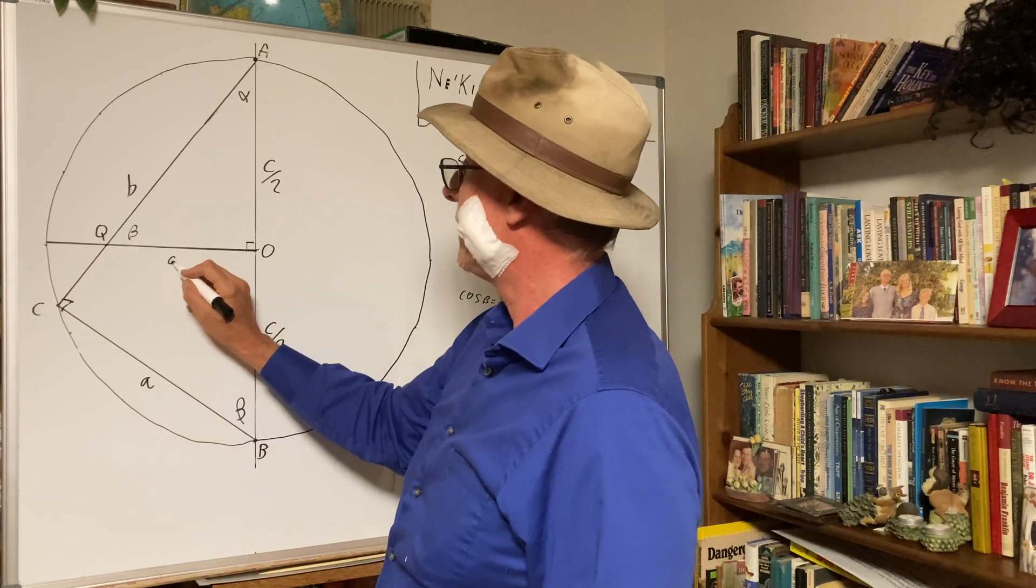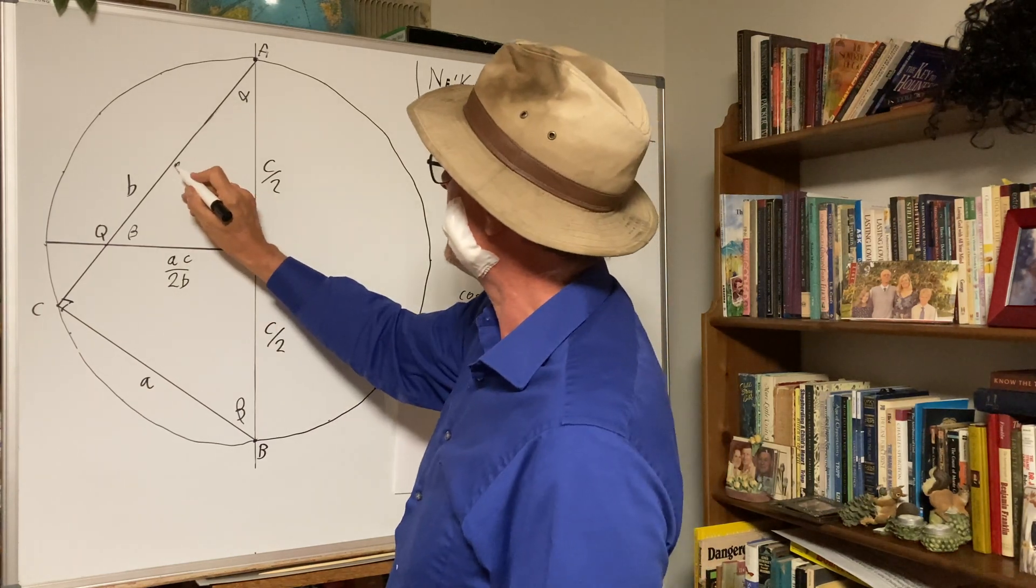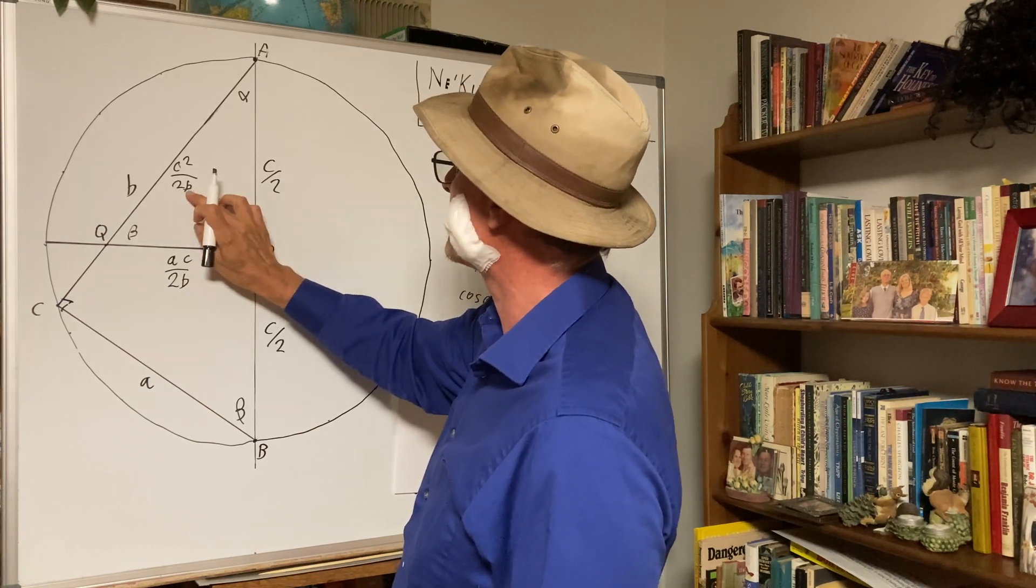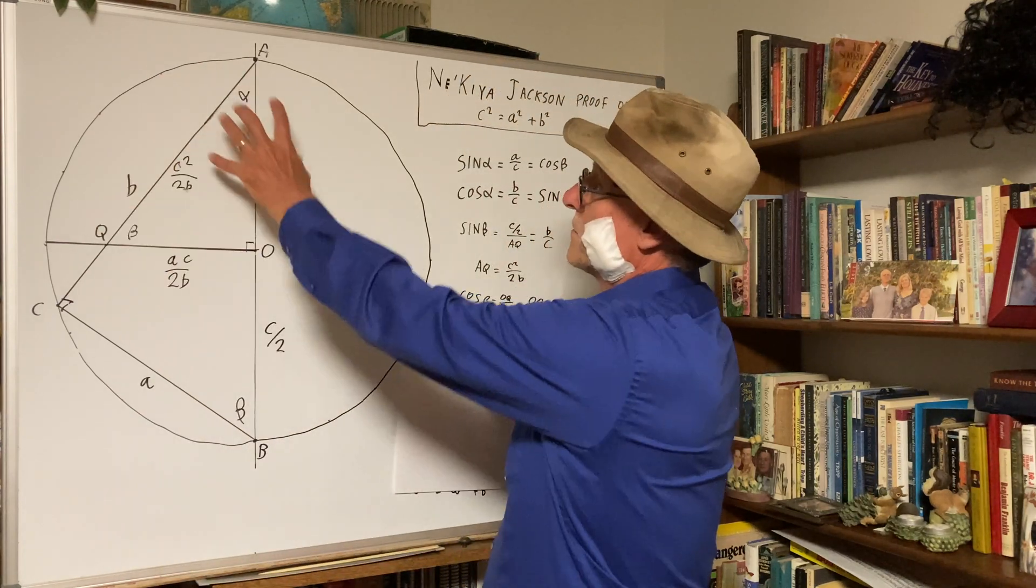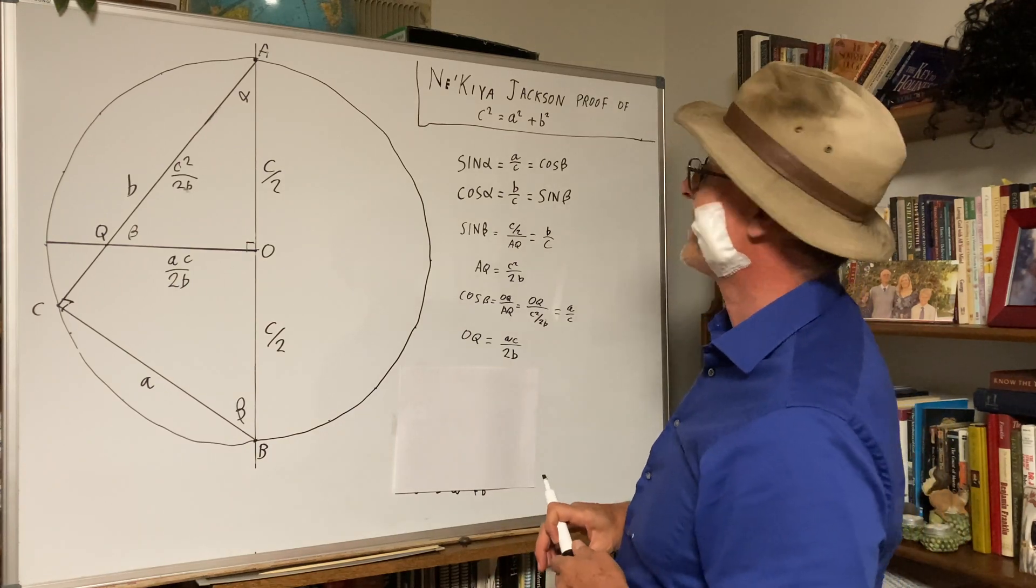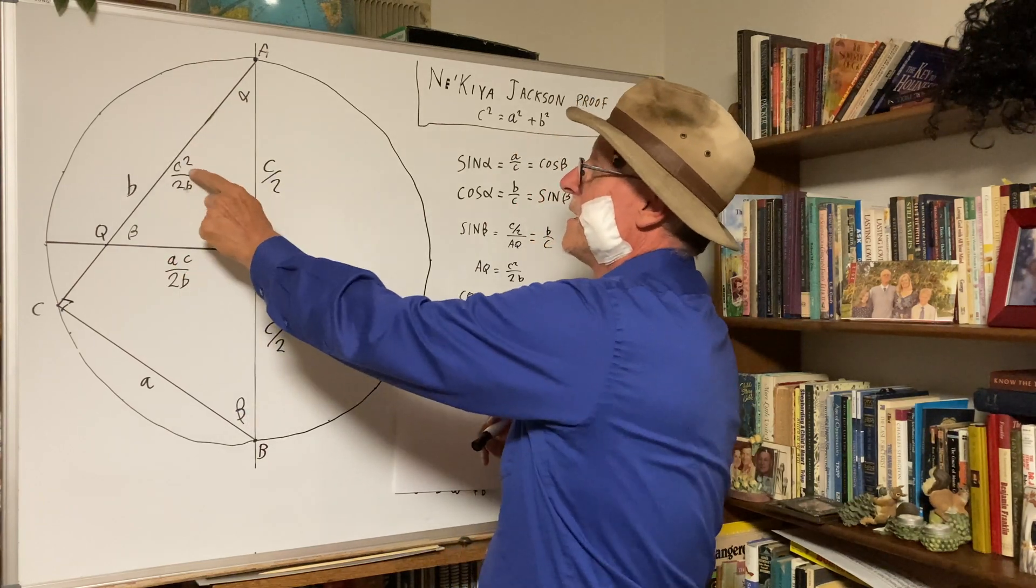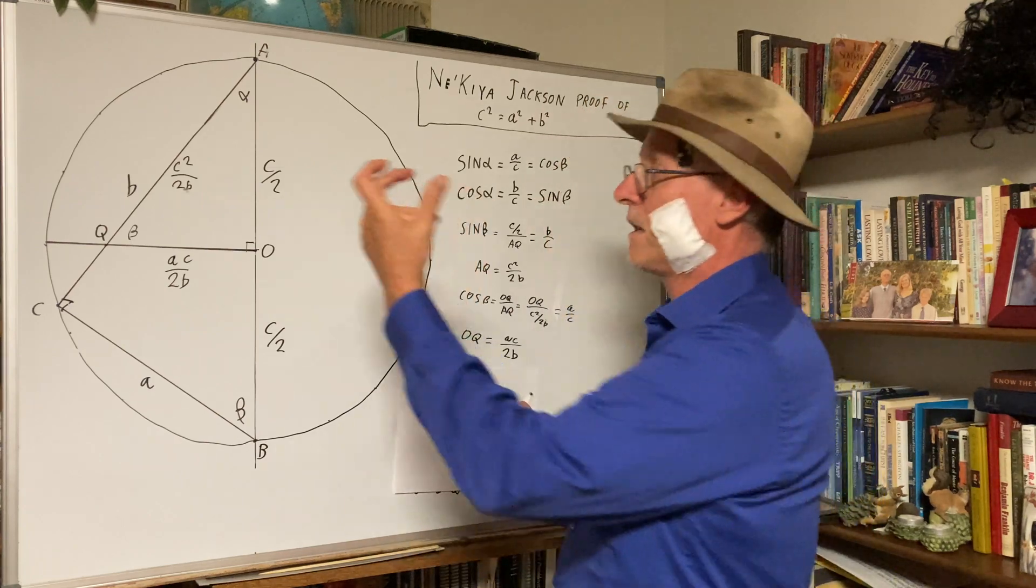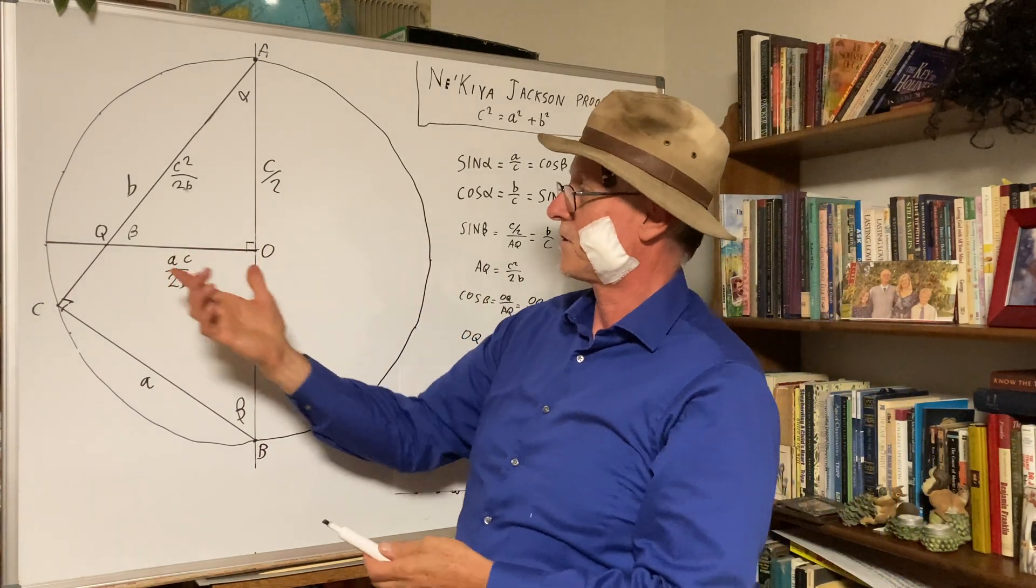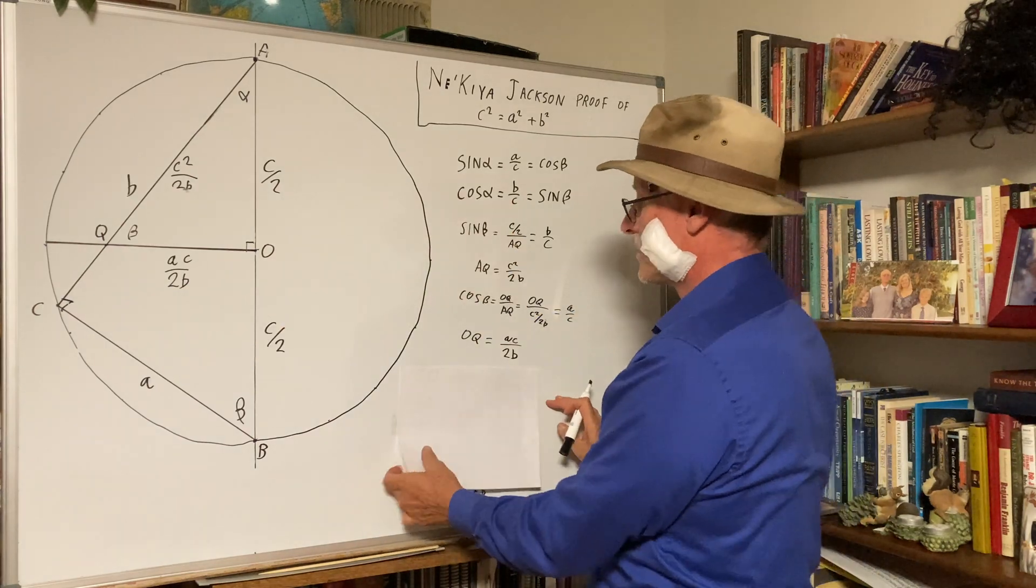So we've got AC over 2B, and we've got C squared over 2B. Those are our values. So our job is to verify the Pythagorean theorem out of these. Look at the proportions of these lengths. The quadrants, which means length segments squared, must be proportions such that you get C squared is A squared plus B squared.